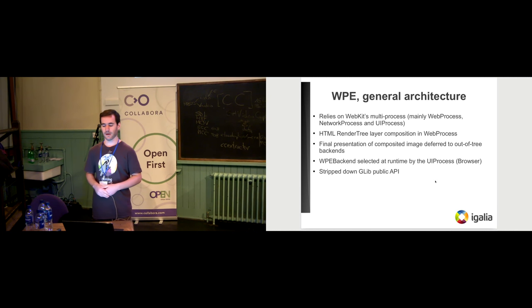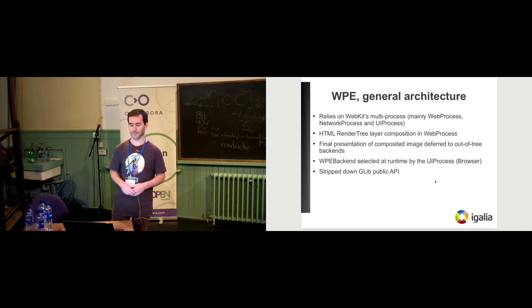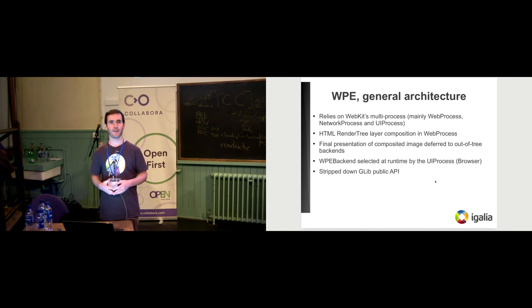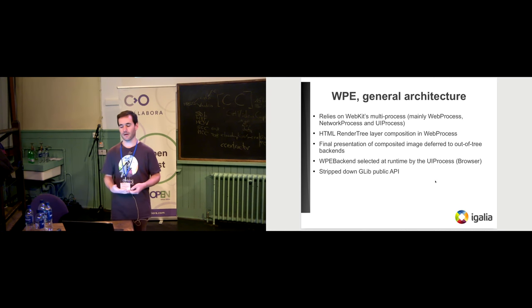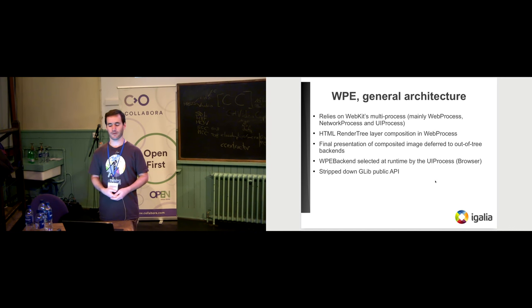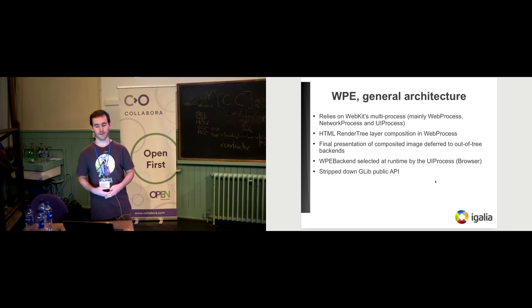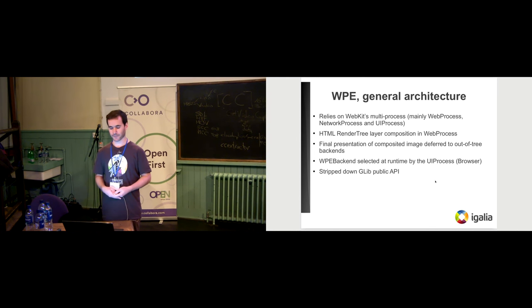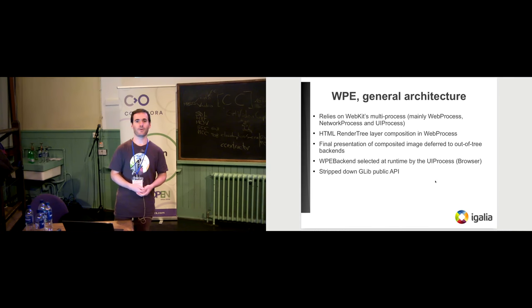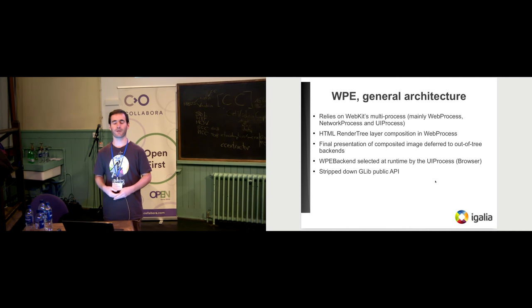I'll briefly mention the three main processes. Data is collected from the network process and goes to a web process that will basically parse the DOM tree, composite the layers together of the page, and output a final image that can be presented to the user. It also manages all the JavaScript stuff in the web process. That composited image goes to the UI process to be displayed to the application, and in the UI process there's some API exposed. WPE doesn't depend on any kind of toolkit widget — we just provide the standard GLib API, which is shared with the GTK port as well.